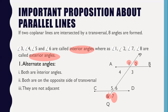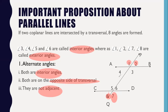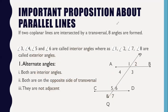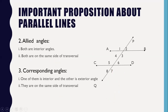Now let's discuss alternate angles. Alternate angles are both interior angles and both are on the opposite side of the transversal, and they are not adjacent. So angle four is paired with angle six, and angle three is paired with angle five — these are alternate interior angle pairs.